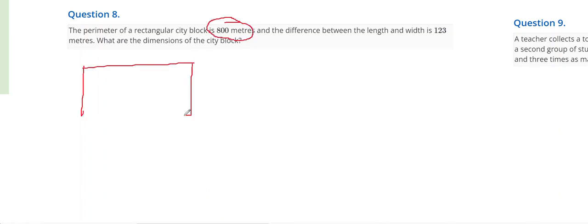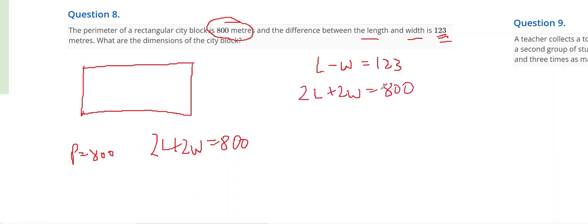So I'm going to draw the rectangular block and the perimeter equals 800 metres. The difference between the length and the width is 123. So equation number 1 is L minus W equals 123. And my second equation is that 2L plus 2W equals 800. That's equation 1. That's equation 2.